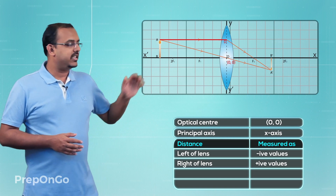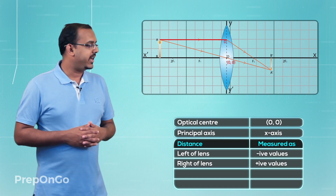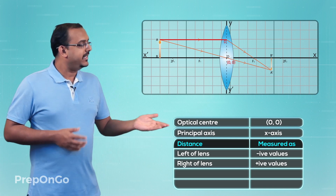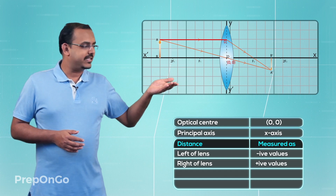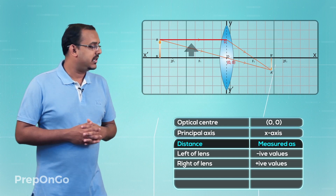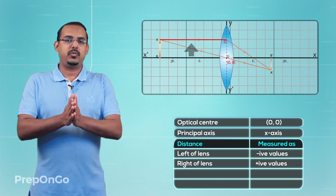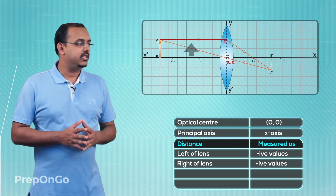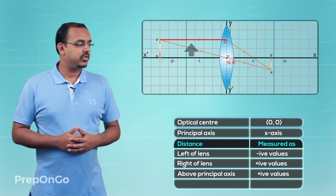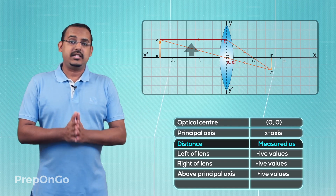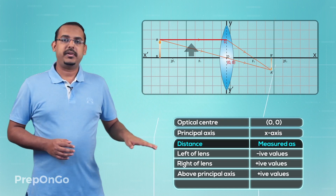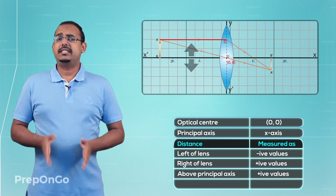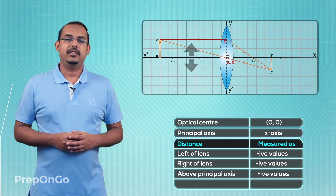Now similarly all the distances which are measured in the vertical direction are measured according to the y-axis. So all the distances measured above the x-axis, above the principal axis, are in the direction of the positive y-axis. So all the distances above the principal axis are measured in positive values. Similarly, all the distances which are measured below the principal axis are in the direction of the negative y-axis, so all those distances are measured in negative values.